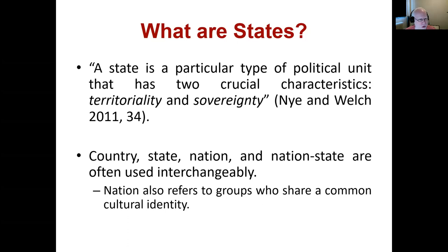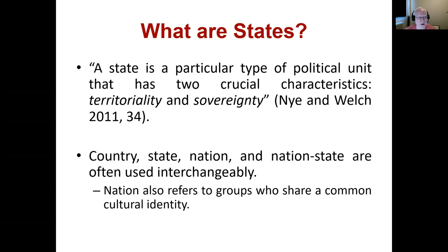A state is a particular type of political unit that has two crucial characteristics: territoriality and sovereignty. When we talk about territoriality, we're talking about a defined territory. If we look at Canada, we could look at a map and say these are the boundaries that are Canada, and outside of here it's not Canada. Since we only have one neighbor, we could say north of this line is Canada and south of this line is the United States. Even within the water, there are agreed-upon zones — every country gets a certain amount of the continental shelf, often 200 nautical miles beyond their land border.